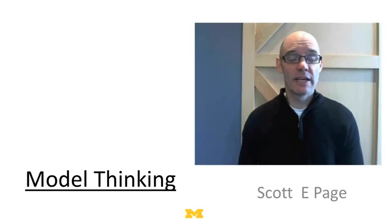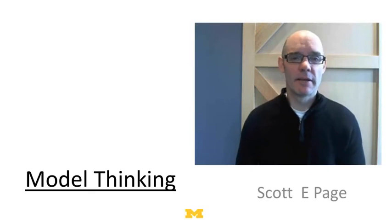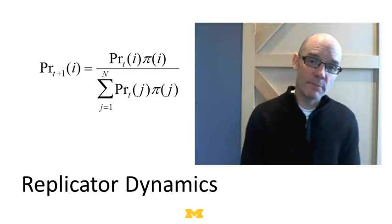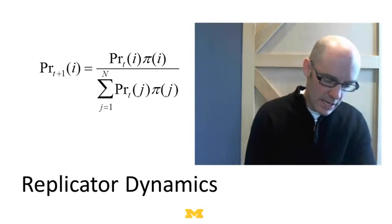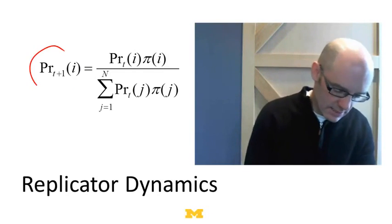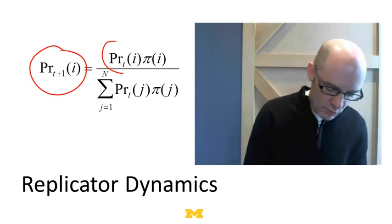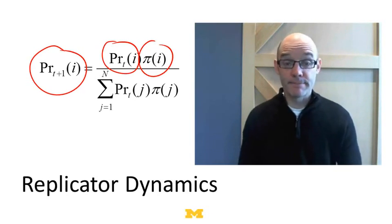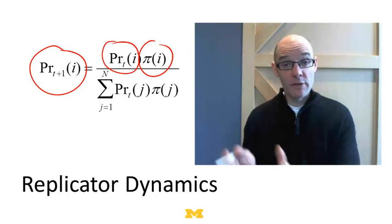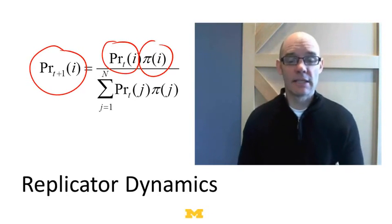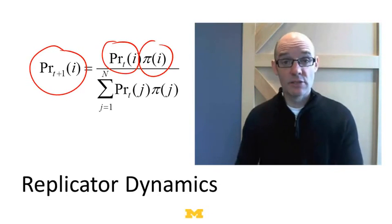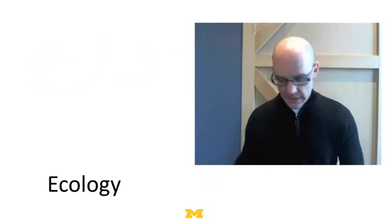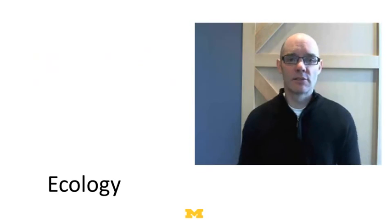In this lecture, we're again going to talk about replicator dynamics. Remember, replicator dynamics have this idea that the proportion of people playing a particular action at time t+1 depends on the proportion that played at time t and the payoff for that action at time t. In the previous lecture, we talked about replicator dynamics in the context of people playing actions or strategies — populations of individuals. In this lecture, we're going to talk about it in an ecological context.